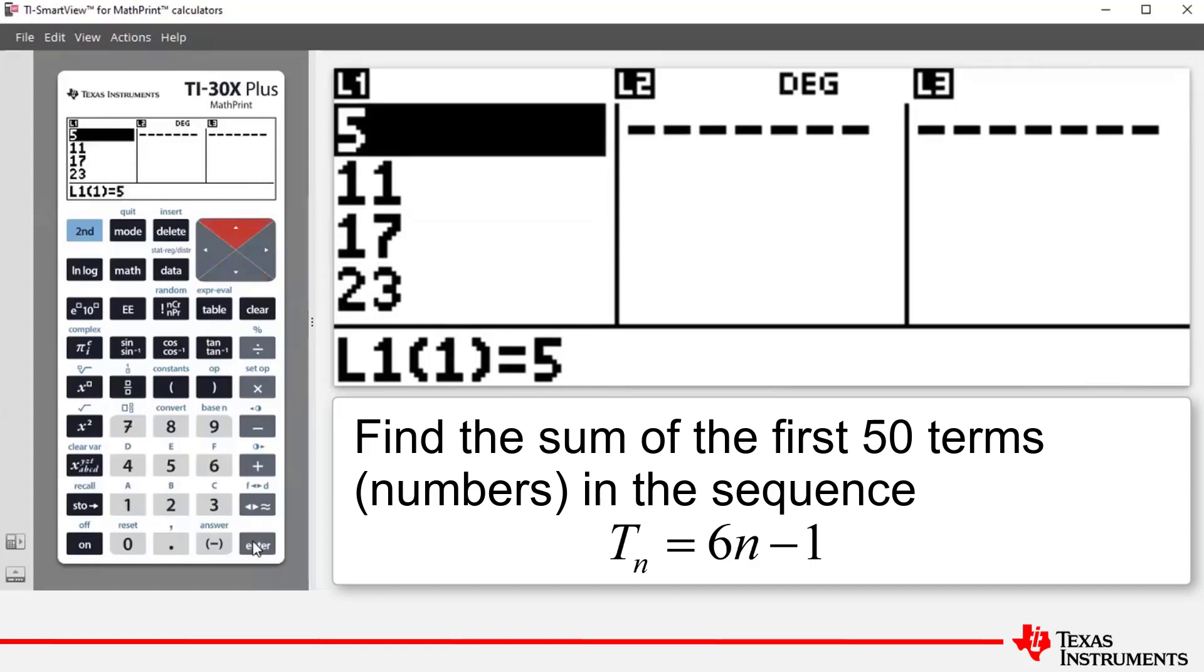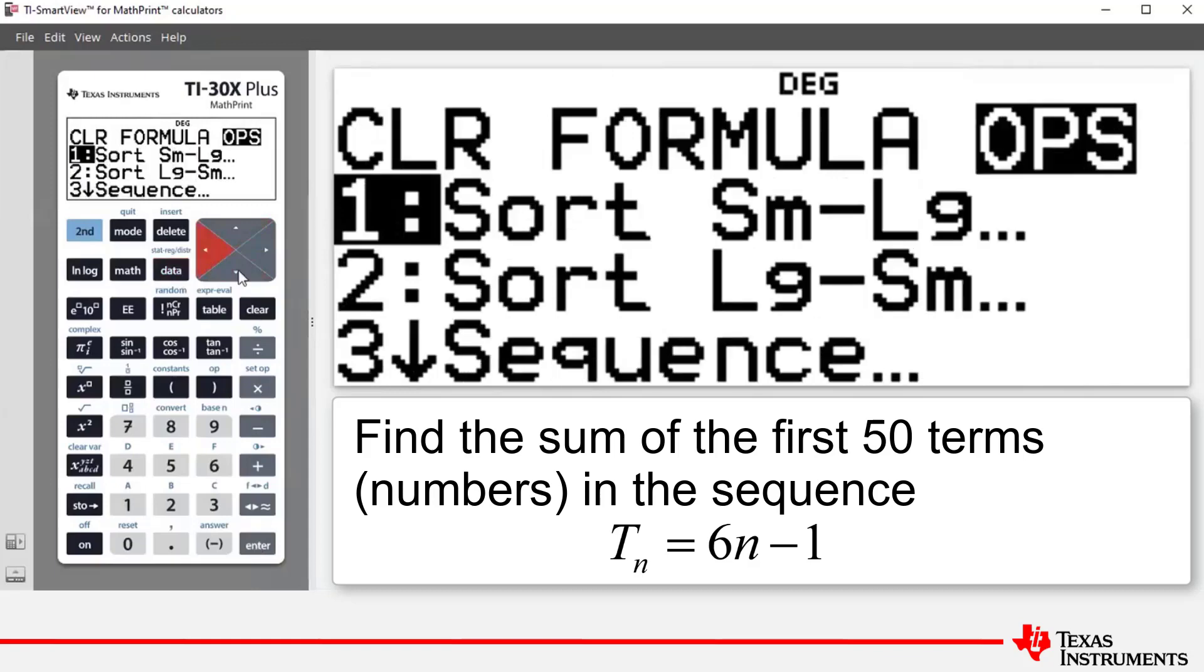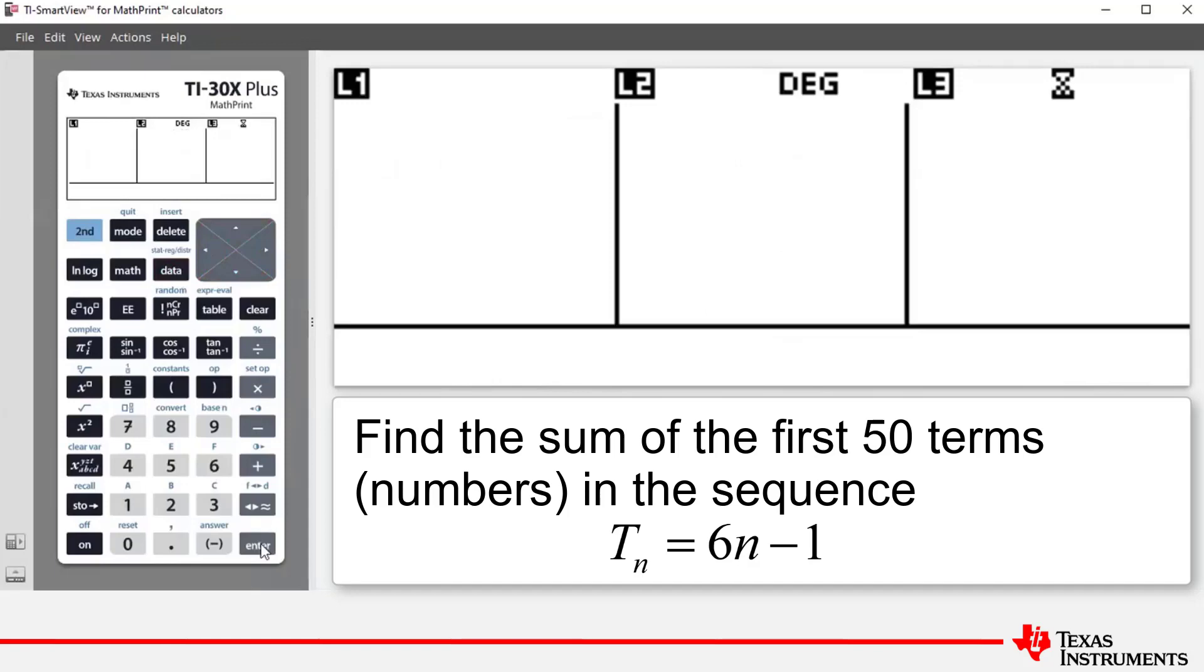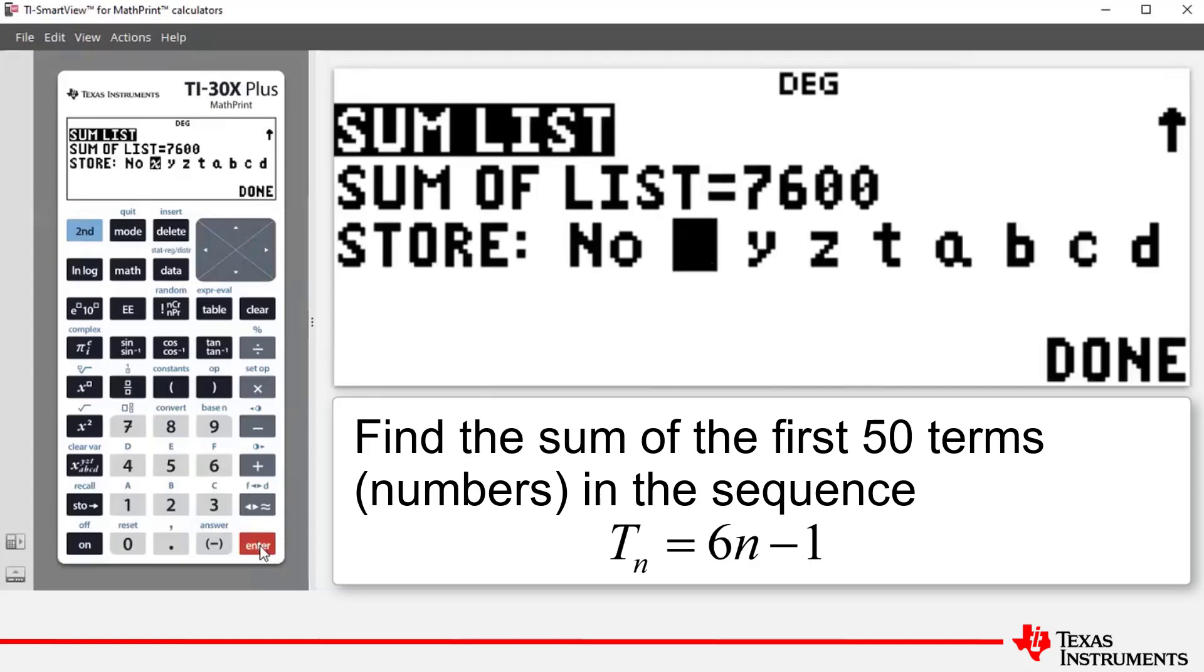Now part C of our example asks us to find the sum of all these values. So what we do is we press data. You can also go to the left to highlight ops or options and number 4 is sum list. So with that 4 highlighted we press enter. We want to sum the list of values in L1. So we press enter again to highlight calc which is short for calculate. Press enter and that gives us the sum of the numbers in the list. So the sum of the first 50 numbers generated by that formula is 7,600.